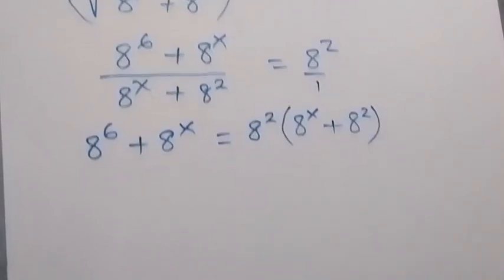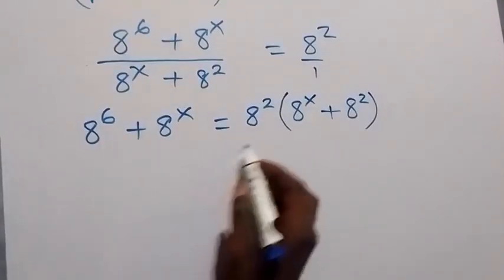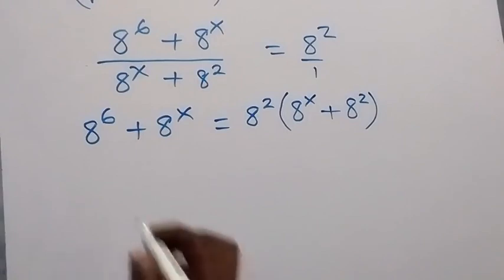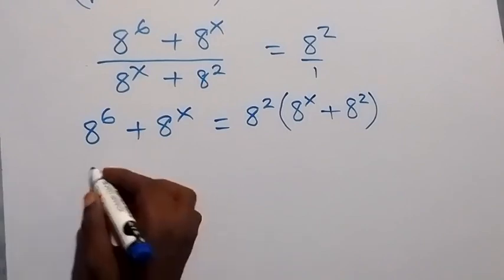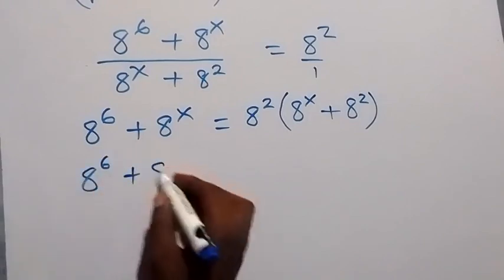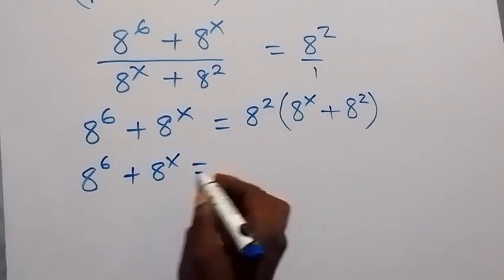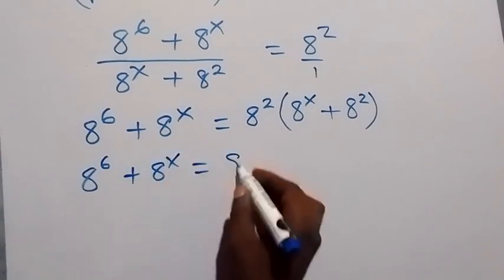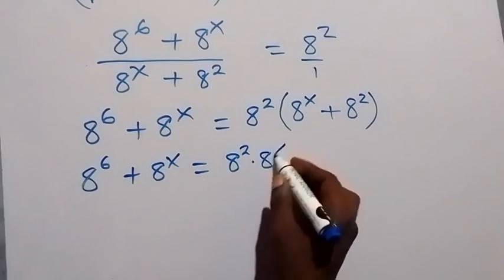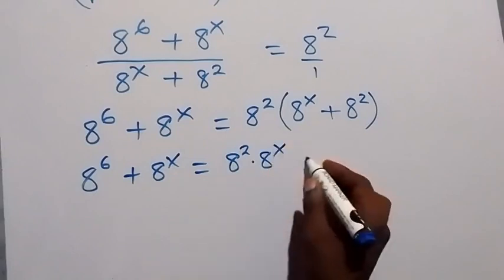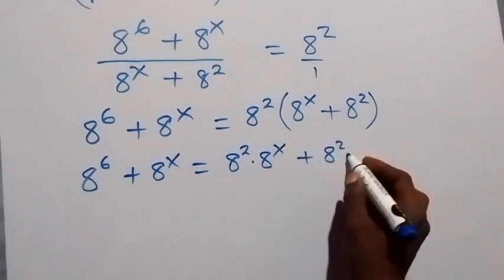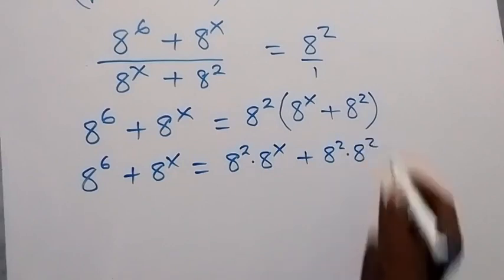In the next step, we can open this bracket. This will give us 8 raised to the power 6 plus 8 raised to the power x, which will now be equal to 8 squared times 8 raised to the power x, then plus 8 squared times 8 squared.